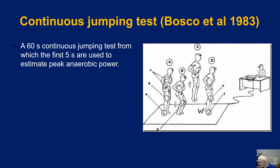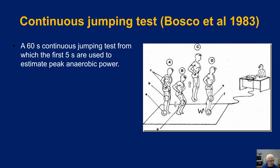With hands on hips — that's a fundamental requirement — they aim to jump as high as they can and as fast as they can within a five-second period. The total number of jumps and the time are then used to estimate the power of the athletes.